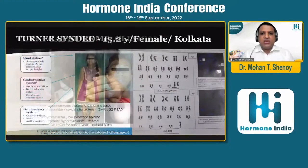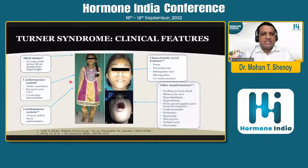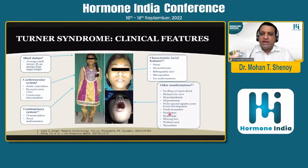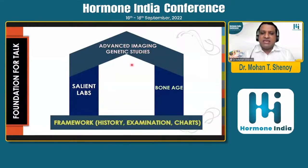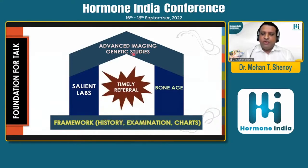This is a typical case scenario. The description includes short stature, delayed puberty, and typical facial features of ptosis, hypertelorism, and micrognathia. We should remember that there are other systemic issues which can occur: cardiovascular, genitourinary, thyroiditis, webbed neck, and hearing loss. The foundation of the talk is establishing a good diagnosis through a framework of history, physical examination, and growth charts. Bone age is very important; salient labs and finally advanced imaging and genetic studies are required. Timely referral to the pediatric endocrinologist is definitely merited when you have a case of Turner syndrome.